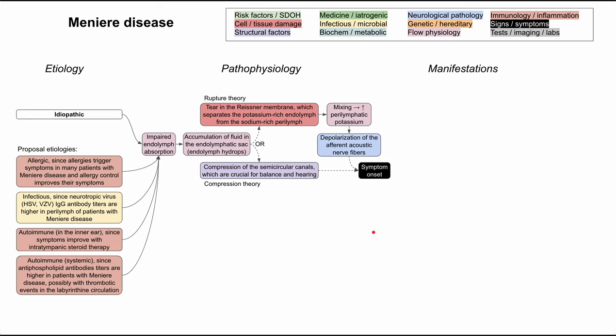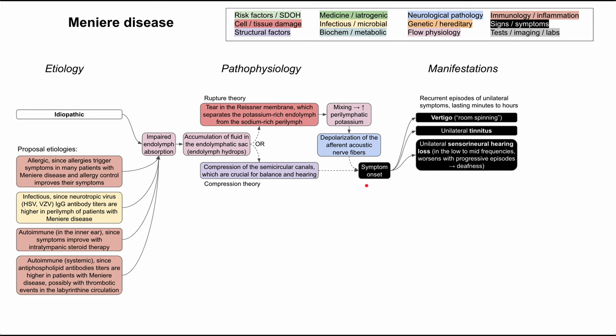Now let's get into the manifestations. Once you have symptom onset, you have recurrent episodes of unilateral symptoms, and these can last minutes to hours. There are three characteristic symptoms associated with Meniere's disease. The first is vertigo — the patient will report their room or surroundings are spinning, and they'll find it hard to stay balanced and will be discoordinated.